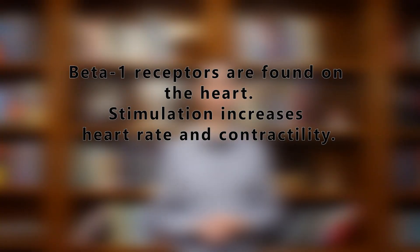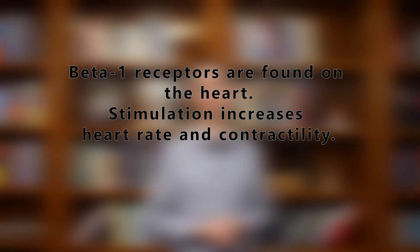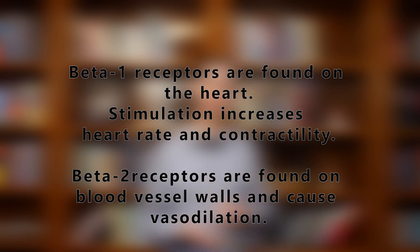There are also two beta receptors to know about: beta-1 and beta-2. Beta-1 receptors are located on the heart muscle, and stimulation of beta-1 receptors causes an increase in heart rate and inotropy. Beta-2 receptors, on the other hand, are also found on the small arteries like alpha-1 receptors, but their main effect is to cause vasodilation.